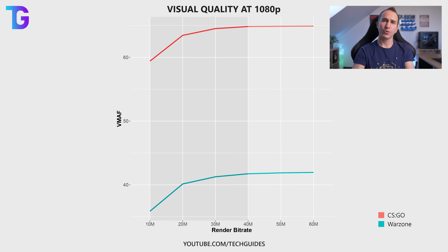We could extend the line further — I did test at 70 and 80 megabits per second for Warzone. However the quality really doesn't significantly improve after that point. I never saw that visual quality ever decreased when increasing the bitrate further. So realistically the only real limit is your upload speed and space on your PC. However, I wouldn't recommend going beyond 40 megabits per second at 1080p since the improvement in visual quality really isn't worth it at even higher bitrates.